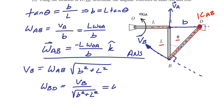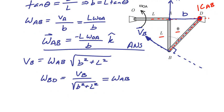Which tells me that omega BD is simply going to equal omega AB. And so I can go ahead and work this out here, and then I'll get simply that omega BD is going to equal omega AB, which will equal minus L omega naught A divided by B in the K direction. And that should wrap us up. Best of luck.